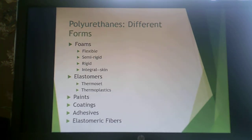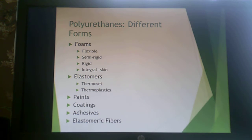The big application area for polyurethanes is foams — flexible, rigid, everything in between, and integral skin foams. Polyurethanes are also used as thermosetting or thermoplastic elastomers, and to a lesser degree in paints, coatings, adhesives, and elastomeric fibers.